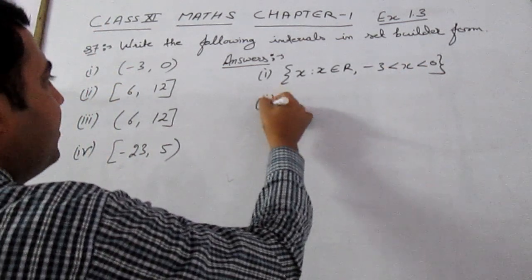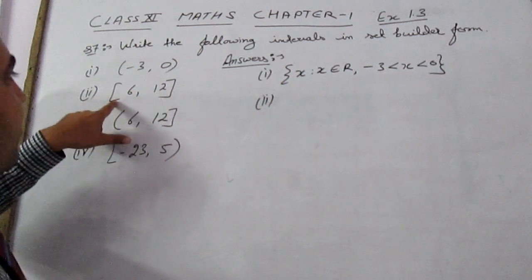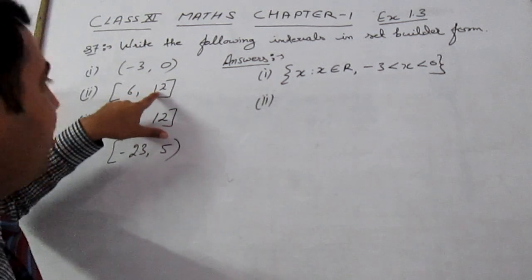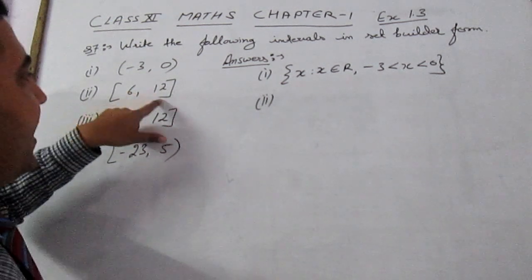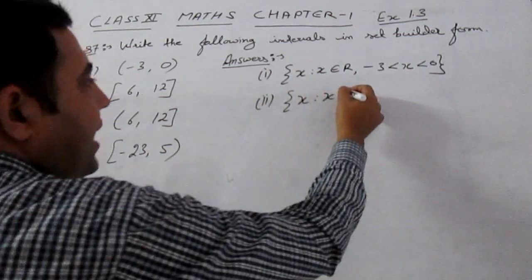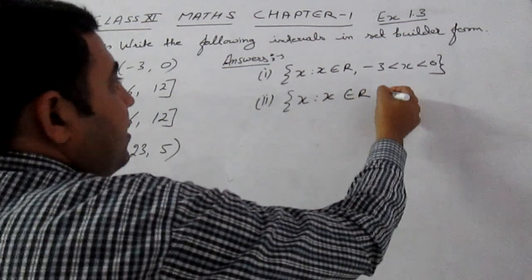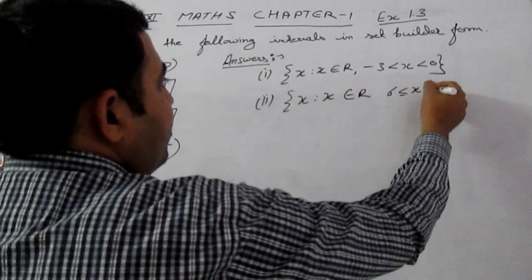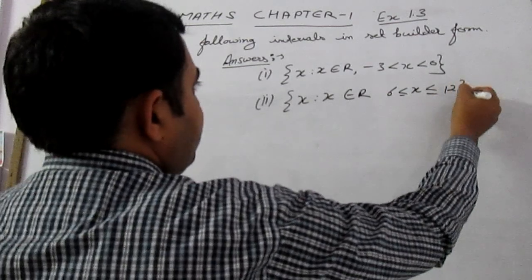In second part [6, 12], both values 6 and 12 are included also because big bracket is used in both sides. So we will write down x is such that x belongs to R, 6 is less than equal to x is less than equal to 12.